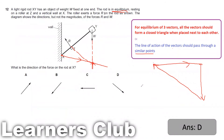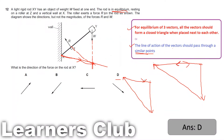That direction corresponds to option D. Using the vector diagram approach, the three forces form a closed triangle following the same order. If the force at X pointed the other way, there would be a resultant and the system would not be in equilibrium. So the answer for Question 12 is option D.